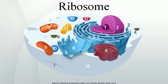Amino acids are selected, collected, and carried to the ribosome by transfer RNA molecules, which enter one part of the ribosome and bind to the messenger RNA chain. The attached amino acids are then linked together by another part of the ribosome.